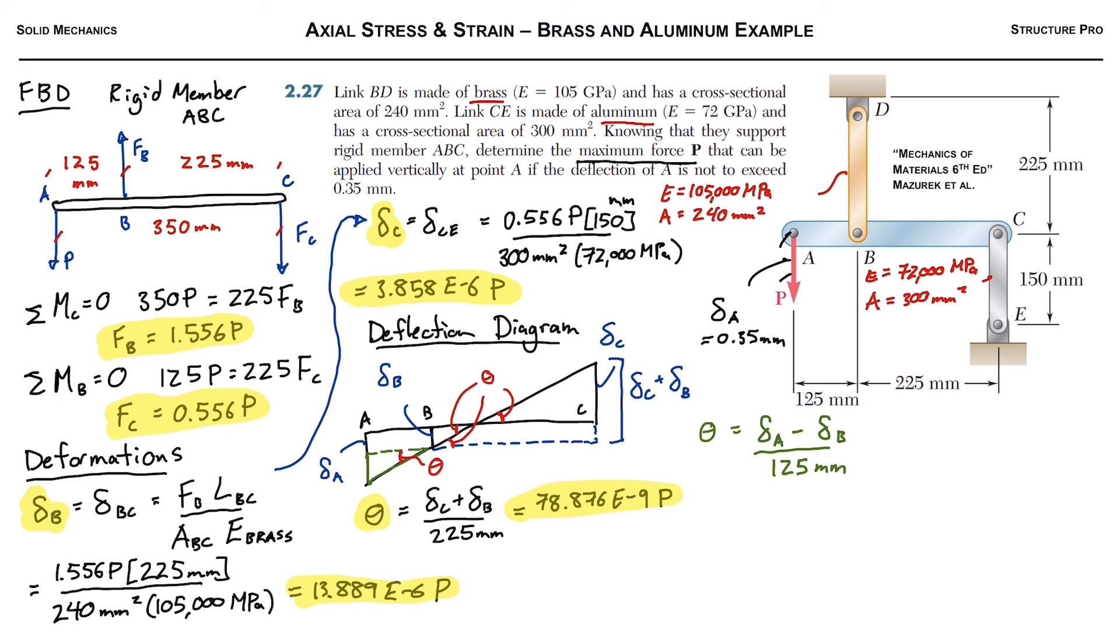Then we can isolate delta A because that's really what we're after. We can rewrite it. Delta A is equal to delta B plus 125 times theta. And we solve for it. We get 23.75 times 10 to the negative 9P.